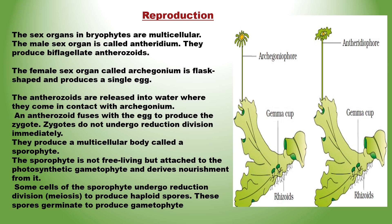Archegonia are flask-shaped structures. Antheridia produce flagellate antherozoids, which are released in water where they come in contact with archegonia containing a single egg. An antherozoid fuses with the egg to produce the zygote. The zygote develops into a multicellular body called a sporophyte. The sporophyte is not free-living but attached to the photosynthetic gametophyte and derives nourishment from it. Some cells of the sporophyte undergo meiosis to produce haploid spores. Haploid spores germinate to produce the gametophyte.